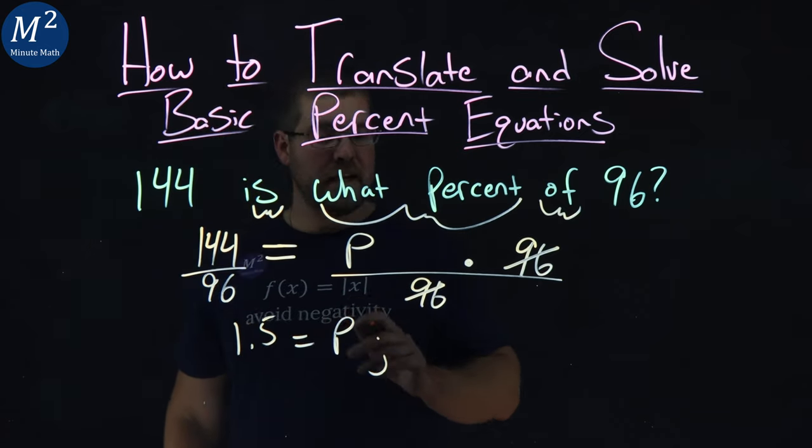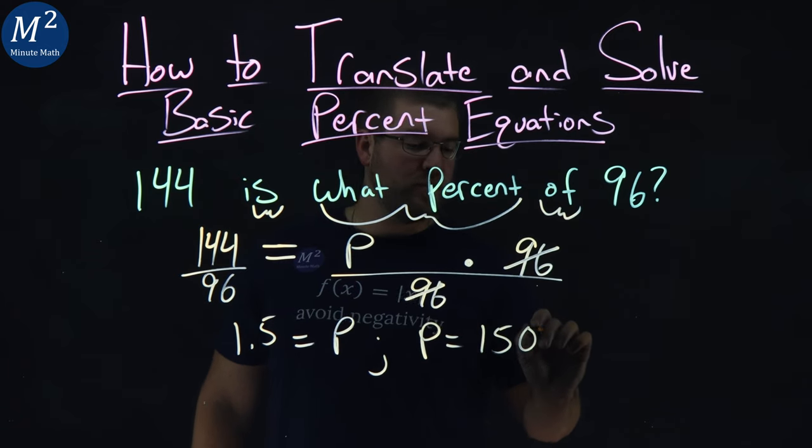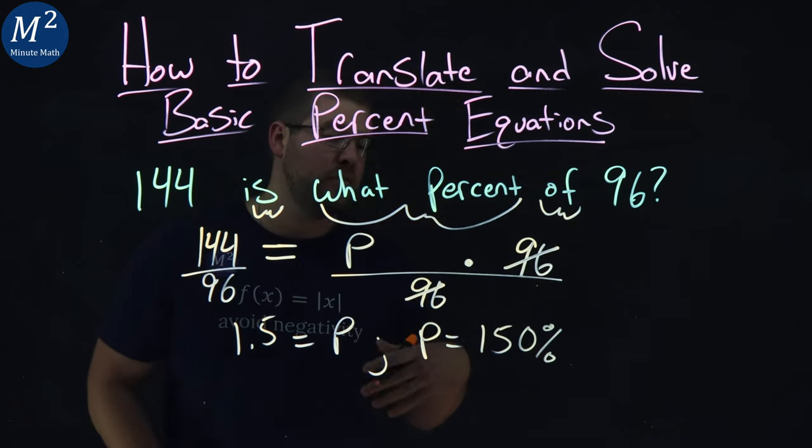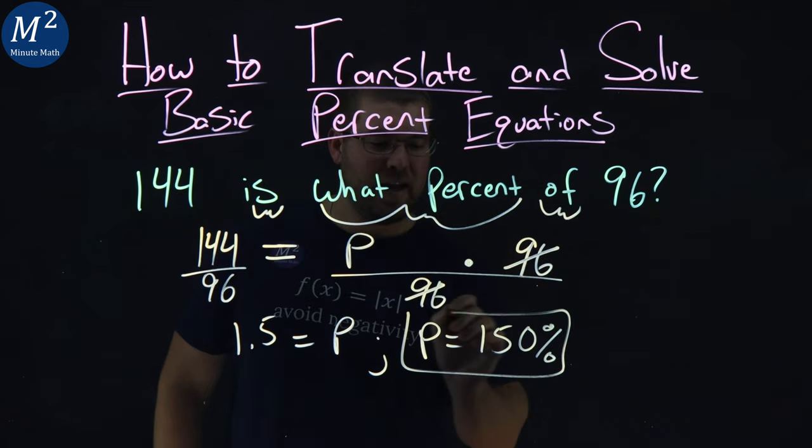1.5 as a decimal is the same thing as 150%. Remember, we have to convert this to a percent. So P is equal to 150%.